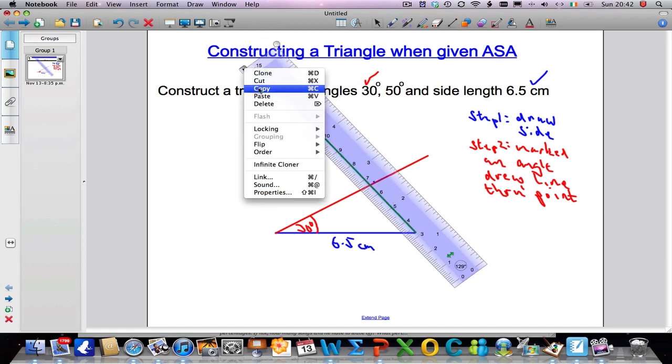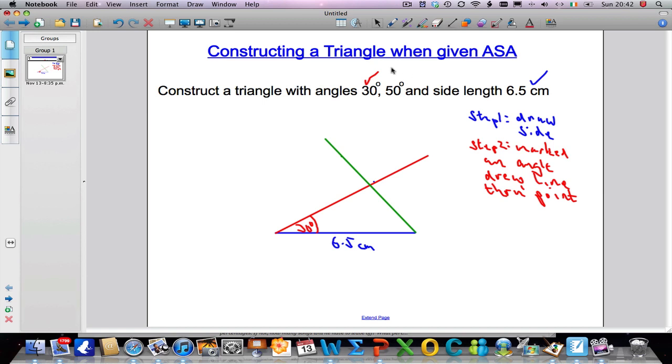I should now be able to get rid of my ruler and I want to mark this angle 50 degrees. And as you can see, we now have a triangle that has a side of length 6.5 centimetres. It has an angle of 30 degrees and it has another angle of 50 degrees. So that is complete and we have our triangle finished.